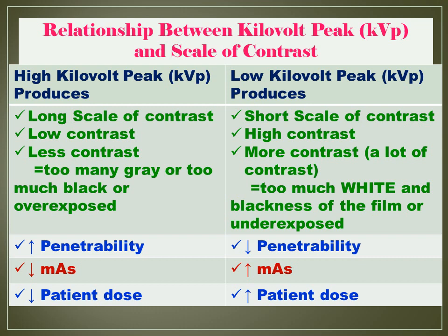We need to increase the MAS in order to produce an acceptable range of optical density — meaning the blackening of the radiograph. The low KVP already produces whiteness, and plus the increase of MAS, we can achieve a good radiograph. But as a result, a higher patient dose, which is not good for the patient.